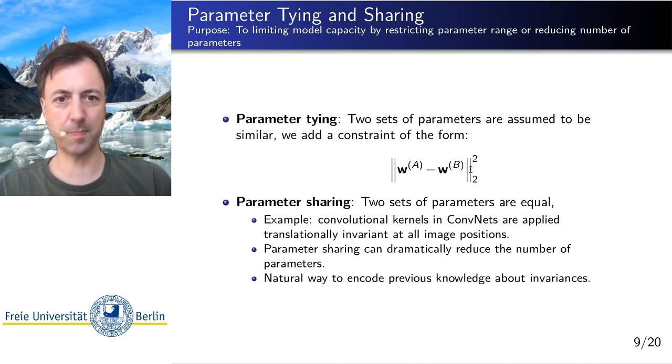And this is a good example of where the regularization method, so in this case parameter sharing, reduces the set of functions we can represent. A convolutional layer is a strict special case of a dense layer. So we can write a convolutional layer in the same form as a dense neural network operation. It's just a linear layer with a weight matrix that has a special form.